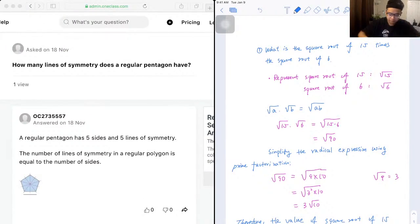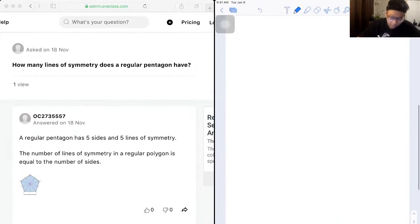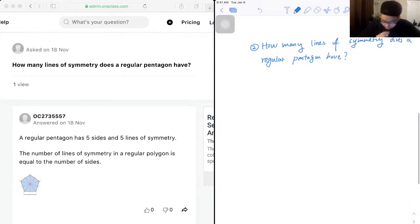So coming up we're asking how many lines of symmetry does a regular pentagon have? So first let's show the diagram of a pentagon.